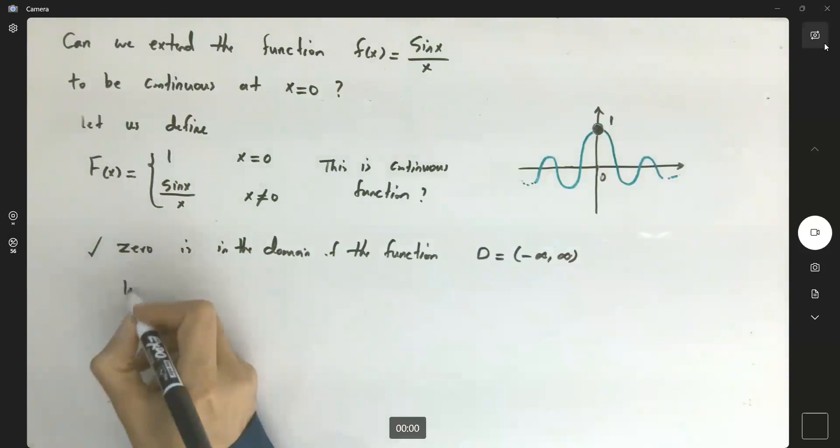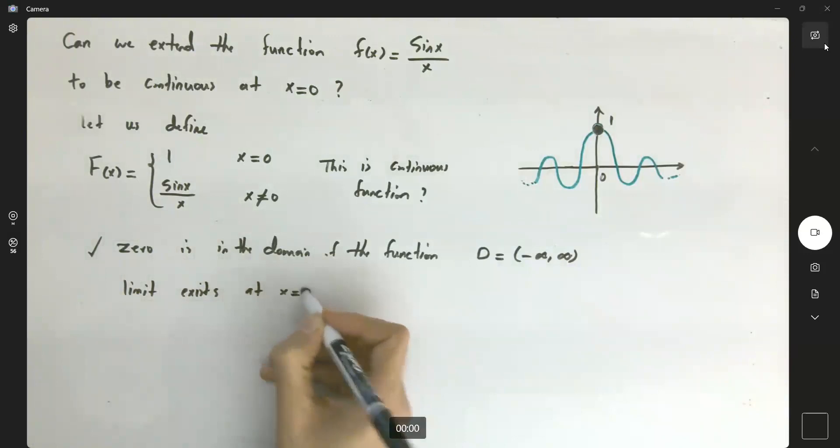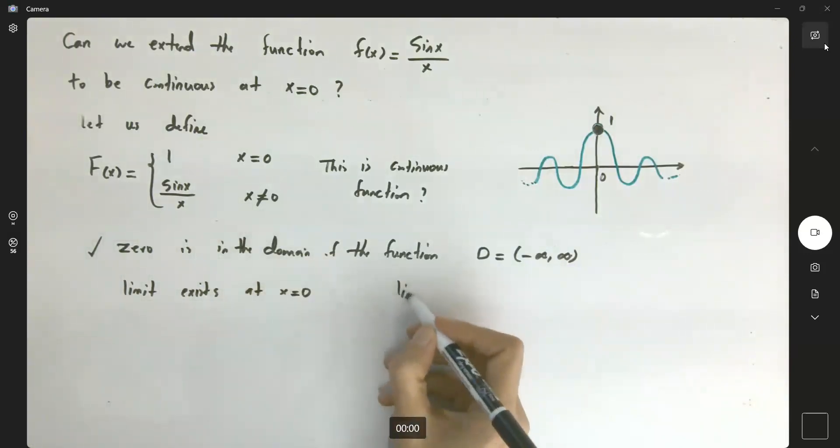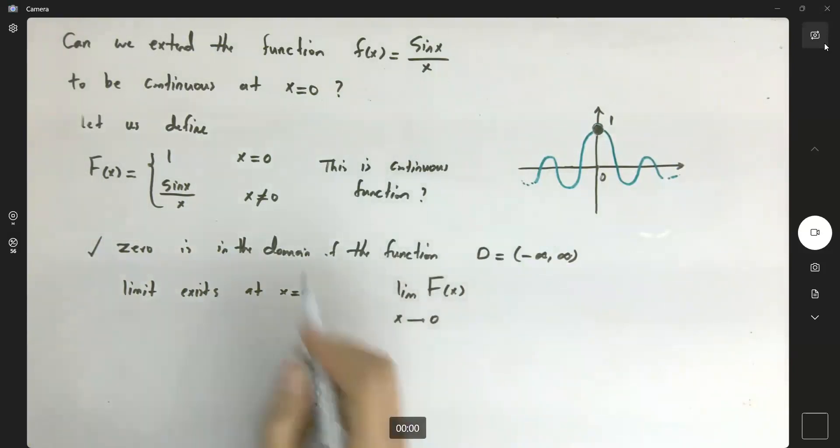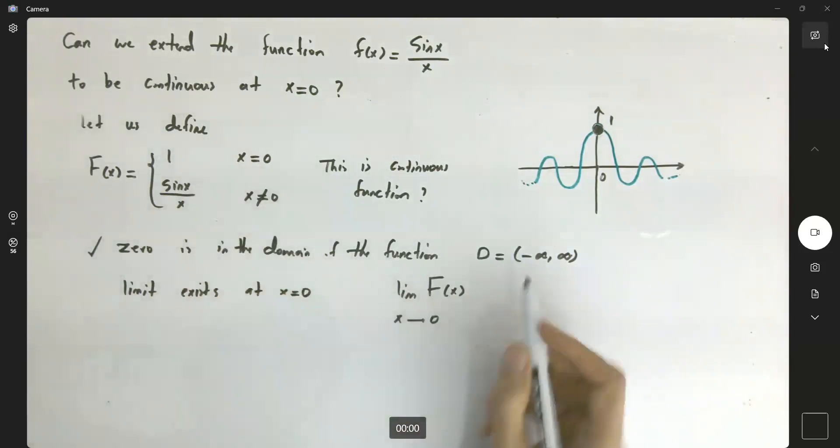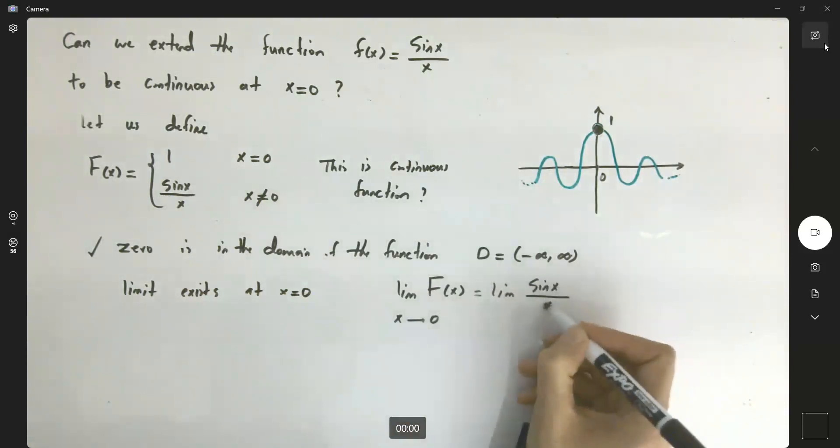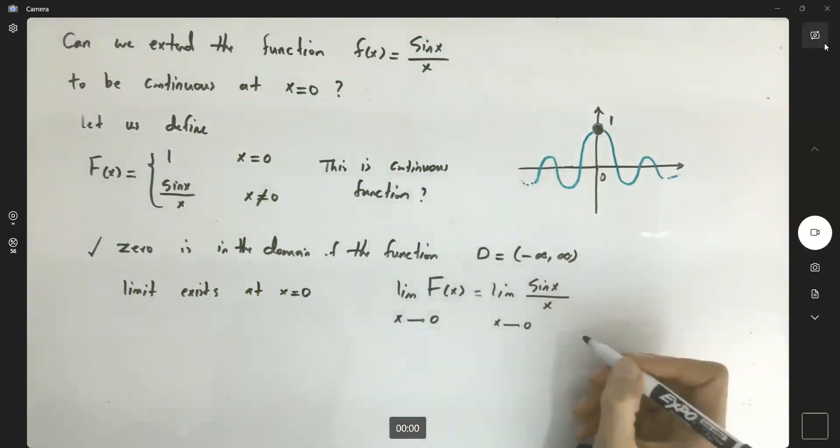The limit exists at x = 0. When you're trying to find the limit as x approaches 0, we're not considering the value at 0. We're considering the values when approaching 0. So you're actually taking the limit of sin(x)/x as x approaches 0.